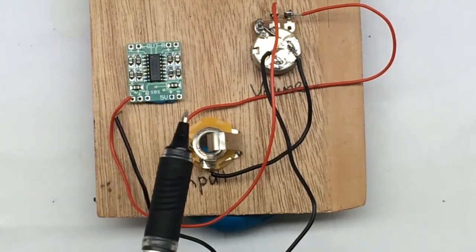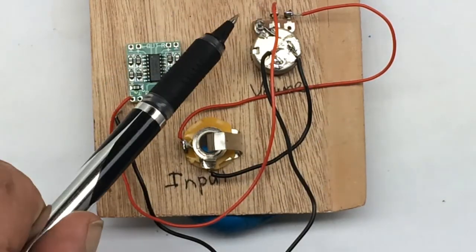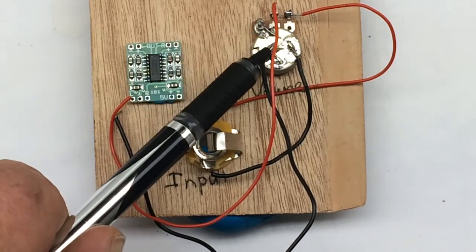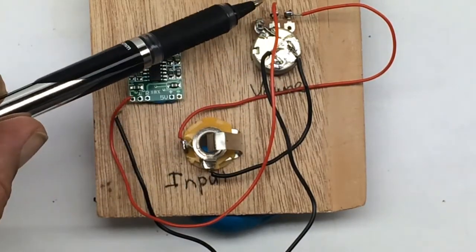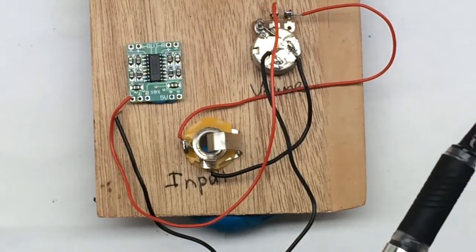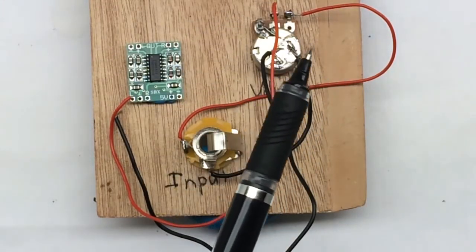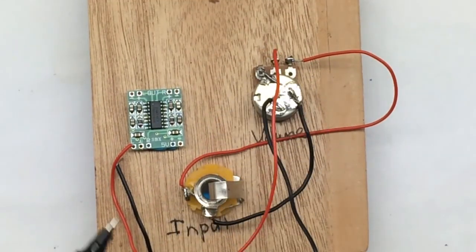We're going to ground the left lug. Again, we're making a standard volume pot, so we're going to ground that left lug. Center lug is going to be our output and our right lug is going to be our input. For a volume control, it's always that way. That is never going to change unless we get funky with some other things, and we'll cover that in other videos later.